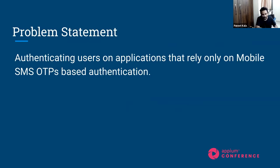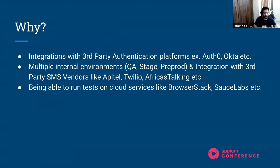Looking at the problem statement, what we want to achieve at the end of this demo is to see how we can use Twilio or any similar service and use an online phone number to send an SMS and authenticate users, automating the entire authentication flow. A lot of people might ask why we need it — we can just mock users. But in our case, the problem is we have integrations in our platform with several third-party services.